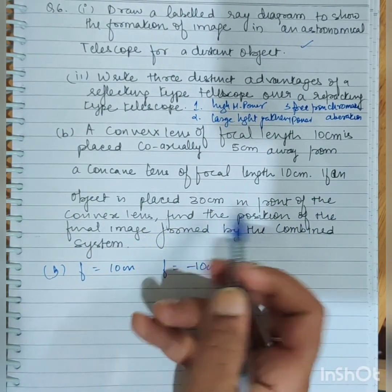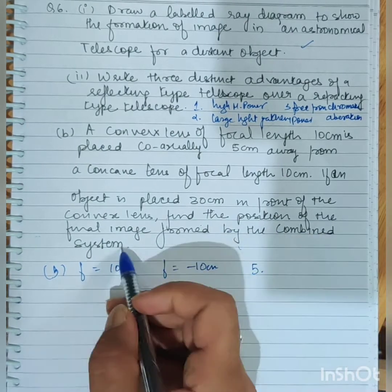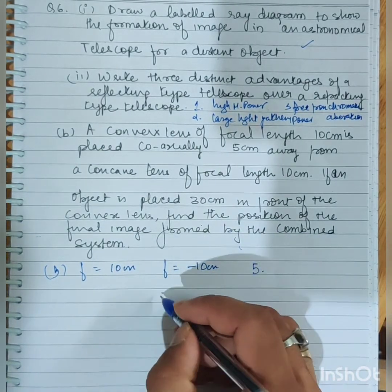If an object is placed 30 cm in front of the convex lens, find the position of the final image formed by the combined system.